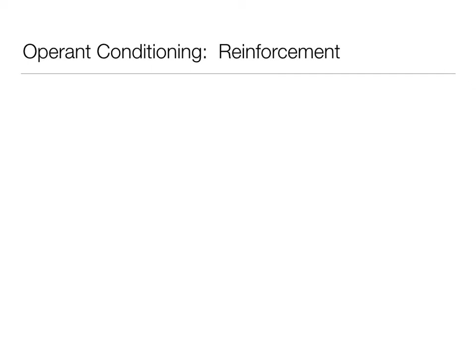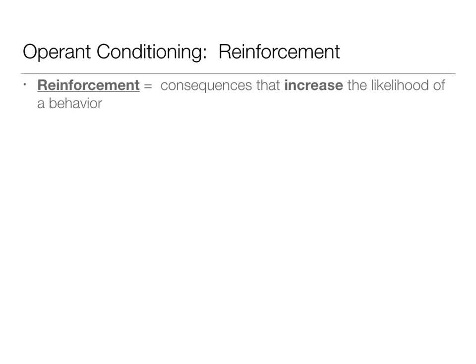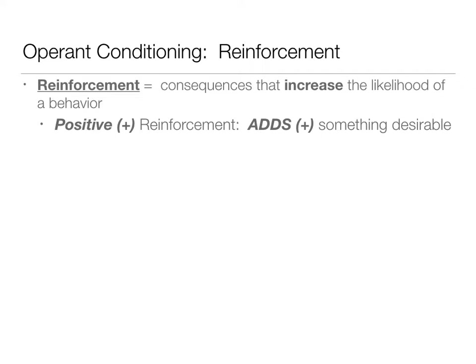In operant conditioning, one of the big pieces Skinner developed is reinforcement — consequences that increase the likelihood of behavior. When a behavior is reinforced, it's more likely to happen again. Skinner identified two kinds of reinforcement: positive reinforcement, where you add something desirable (like giving candy for a desired behavior), and negative reinforcement, which subtracts something adverse.